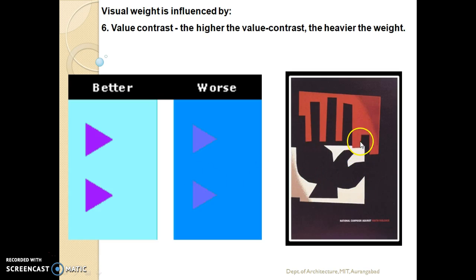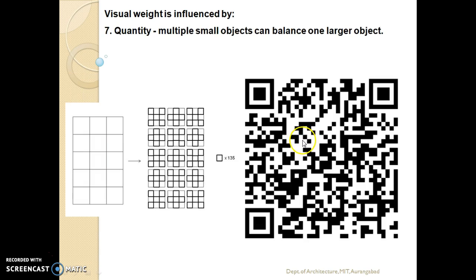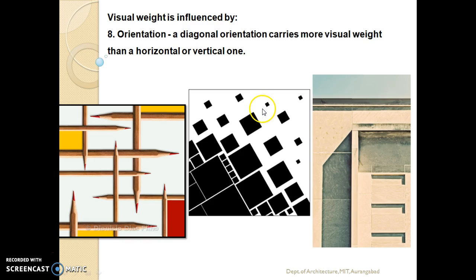Visual weight is also influenced by quantity. Multiple small objects can balance one large object.